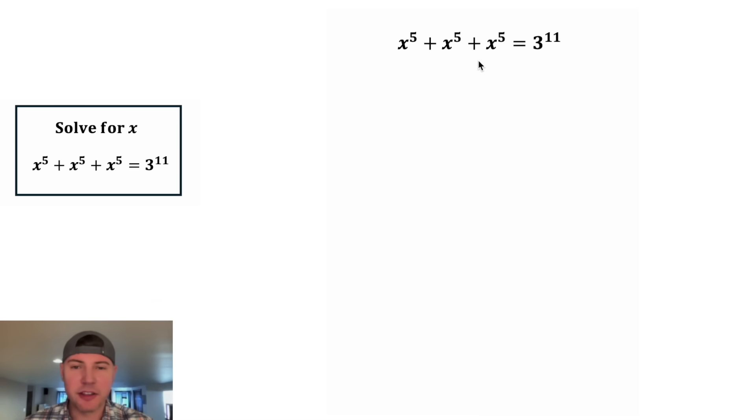On the left hand side we have 3x to the 5th. We can write that as 3x to the 5th, and then we can divide both sides of the equation by 3. On the left hand side these 3s are going to cancel each other out so we have x to the 5th.